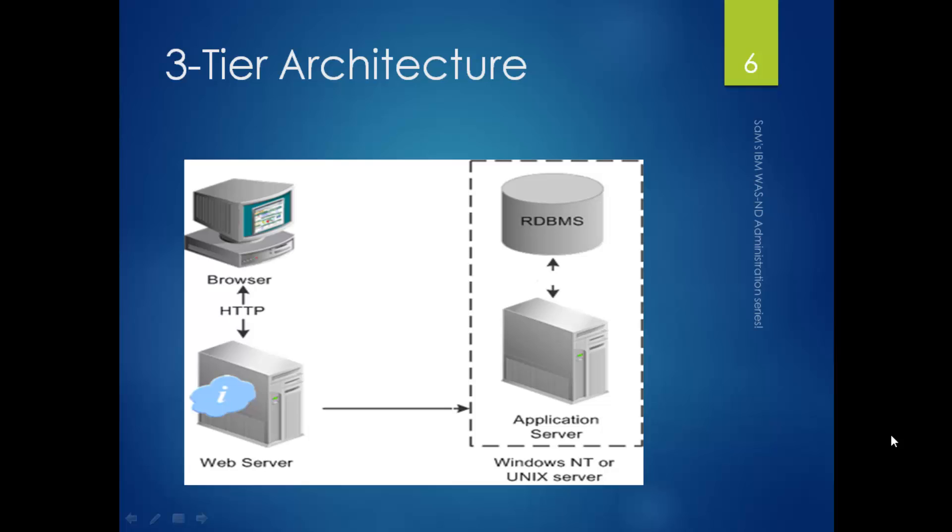Before moving any further, I wanted to give you an idea of where exactly IBM WAS fits in. Let's talk about a typical scenario where an end user uses a web application. The user opens a browser on their local device and hits the web application URL or link. The HTTP request is taken from the browser and transported all the way up to the web server. The web server serves that HTTP request, and it decides — if the request is for static content, the web server will be able to serve the request. If the request is for dynamic content, then the web server will reroute the traffic to the application server, which is the place where your web application is hosted.